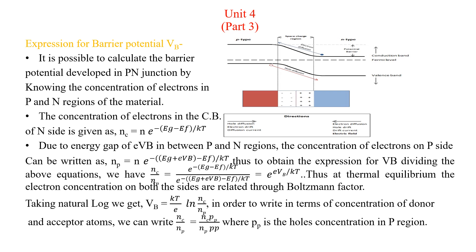After that we have seen the meaning of Fermi energy for conductors, then we have seen the probability distribution function given by Fermi-Dirac statistics, and after that we have seen the Fermi level position for n-type semiconductors, for p-type semiconductors, and for intrinsic semiconductors. In intrinsic semiconductors the Fermi level always lies at the middle of the gap, for n-type it is just below the conduction band, and in p-type semiconductors it is just above the valence band.